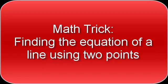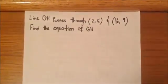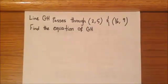Don't forget to subscribe so you can stay current with all of our new videos. Alright, so we have a problem here that is related to slopes and equations of the lines. It says line GH passes through the coordinate 2 and 5, 16 and 9, find the equation of GH.